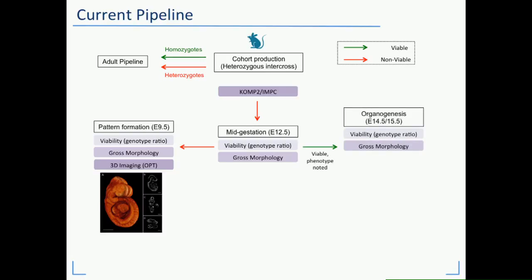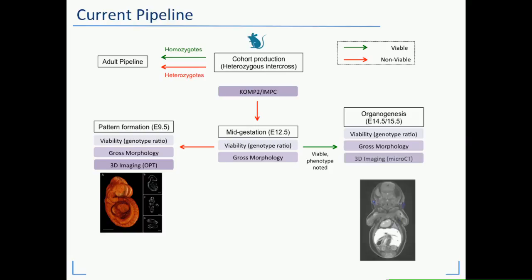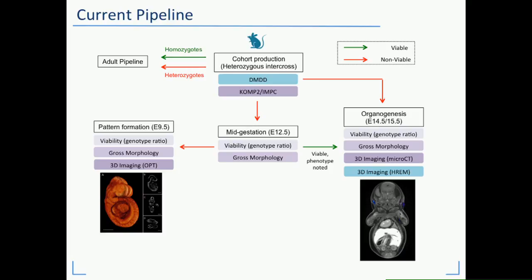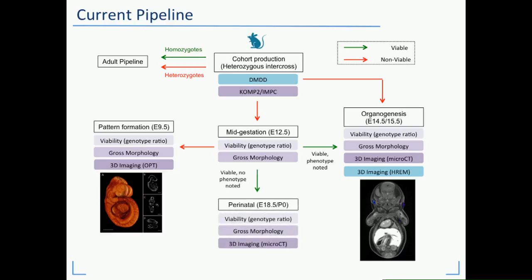If they're viable and we note a phenotype, we move to what we call the organogenesis stage at E15.5. This is a perfect stage for using iodine contrast micro-CT to generate high-resolution 3D data sets. You'll also hear more from Jackie about the DMDD program, which moves directly to E14.5 — a different imaging modality but similarly generating high-resolution 3D data. Some centers proceed to E18.5 when embryos are viable and no phenotype is noted at E12.5, and we've developed tools to generate micro-CT data at that stage as well.